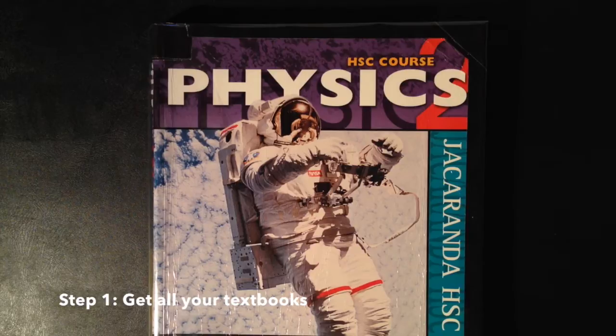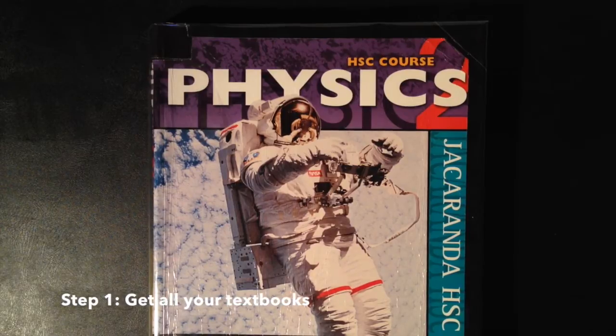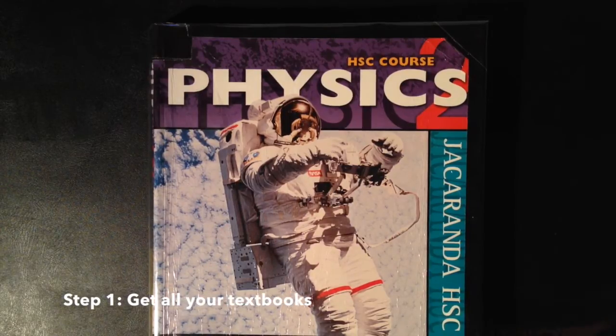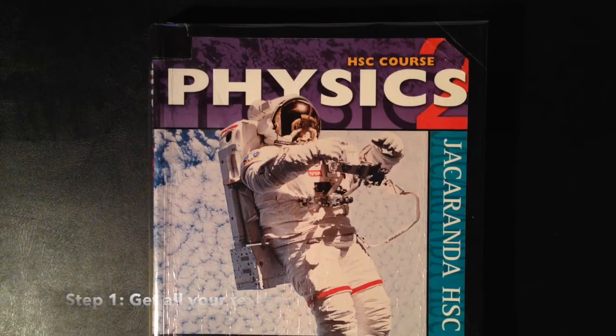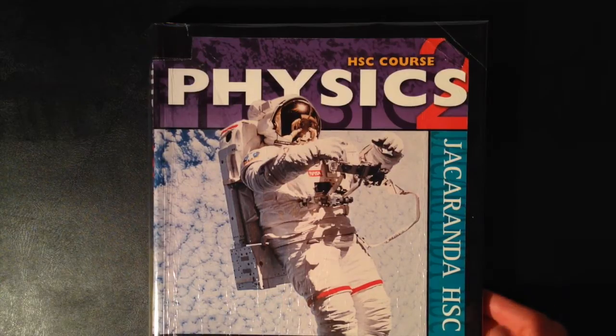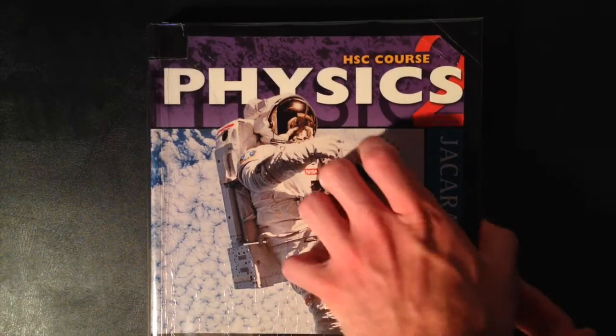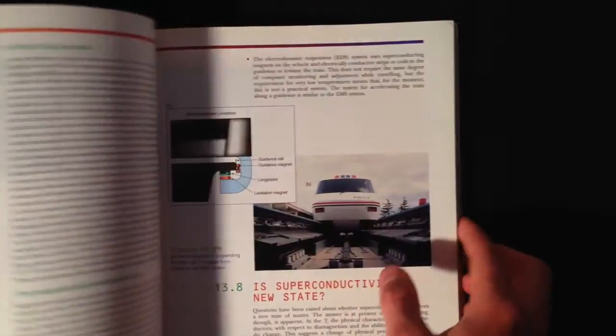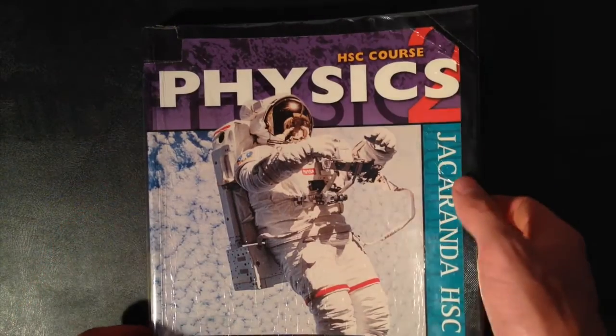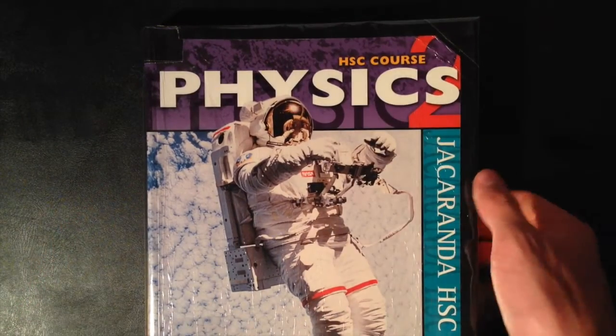All right, so the first step is simple. Get the right set of text, notes or sources of where you're going to get all your information from for a certain subject. So for example, physics. This is the Jacaranda HSC Science Year 12 edition. It's pretty thick. Good luck to get through all that. Yeah, but it's got everything I'll need. Teacher recommends it. Looks pretty good. It's pretty detailed.